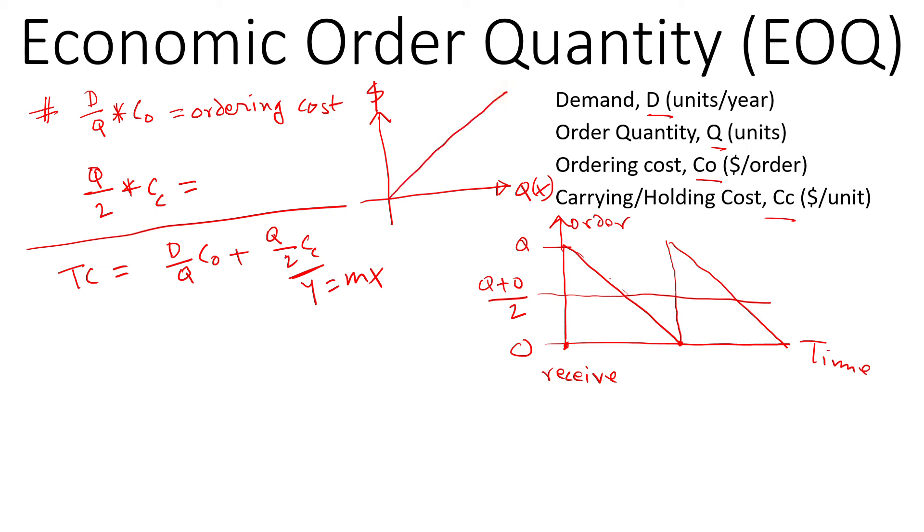And this one is y equal to some constant by x, so that's going to look something like this. So this is our carrying cost—as you can see, if the order size is larger, it will have more holding cost. And this is the ordering cost, so it will reduce with the order size.